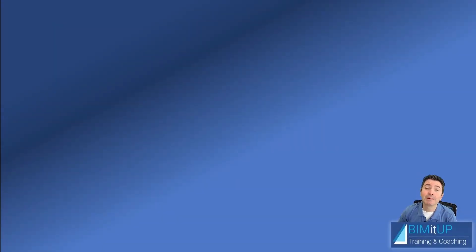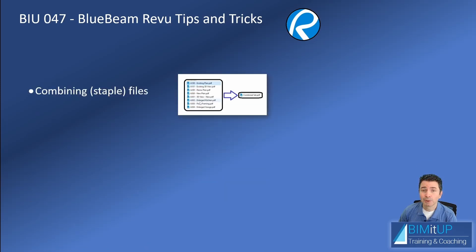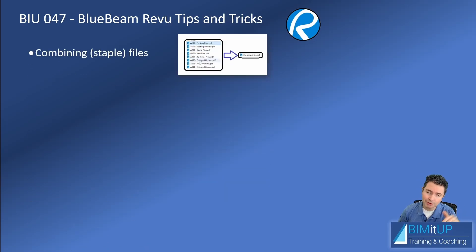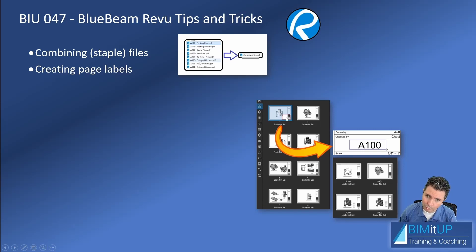Hello everyone, Alex again. Today I'm going to show you a bunch of tips and tricks in Bluebeam Revu. First, I'm going to show you how to staple together a bunch of PDFs with one click directly from Windows Explorer. Then we'll go over how to create page labels — extremely useful because you can rename your thumbnails with information contained within the PDF, so instead of 1, 2, 3, 4, you'll have A100, A101, etc.